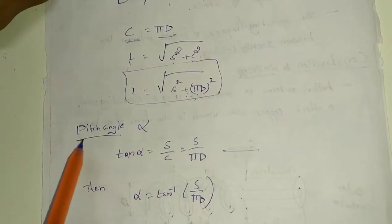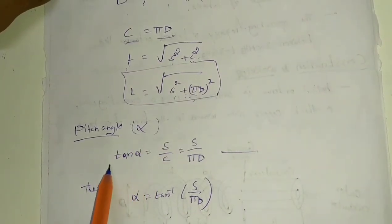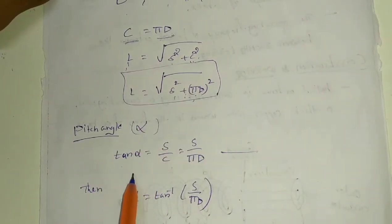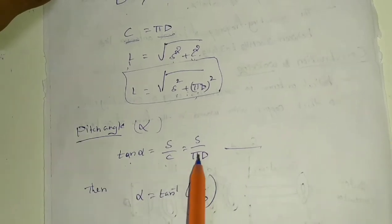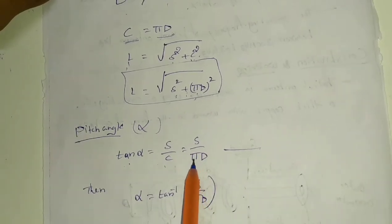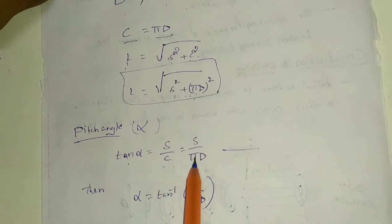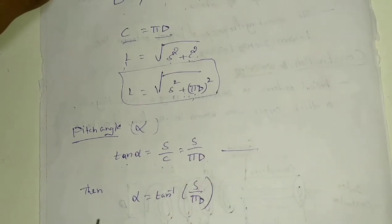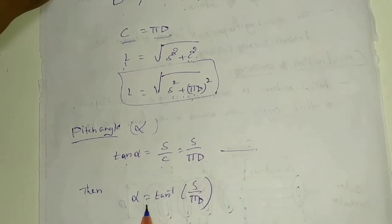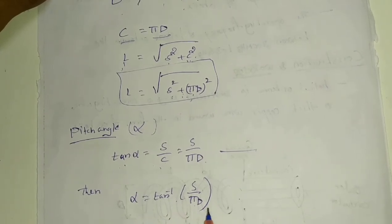Now moving on to the pitch angle, which is denoted by alpha. Tan alpha equals s divided by C. Substituting C equals pi D, and solving this equation, alpha equals tan inverse of s divided by pi D.